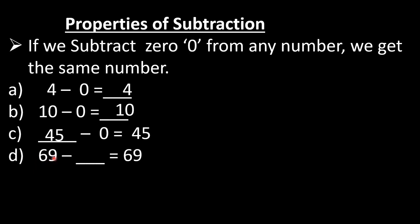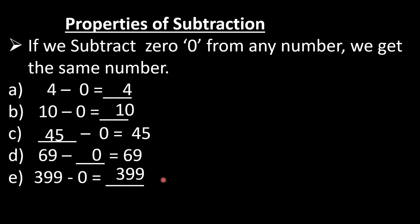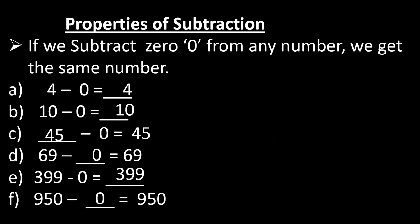In D part, 69 minus dash is equal to 69. What do we have to minus? That is 0. In E part, 399 minus 0 is equal to dash — the number itself, 399. In F part, 950 minus dash is equal to 950, so we write 0 here. When we subtract 0 from any number, we get the same number.